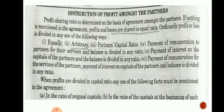In that condition, we can distribute profit and losses equally. If nothing is mentioned in the profit sharing ratio in the agreement, then profit and losses are distributed in equal ratio. Ordinary profit and losses are divided in any one of the following ways.